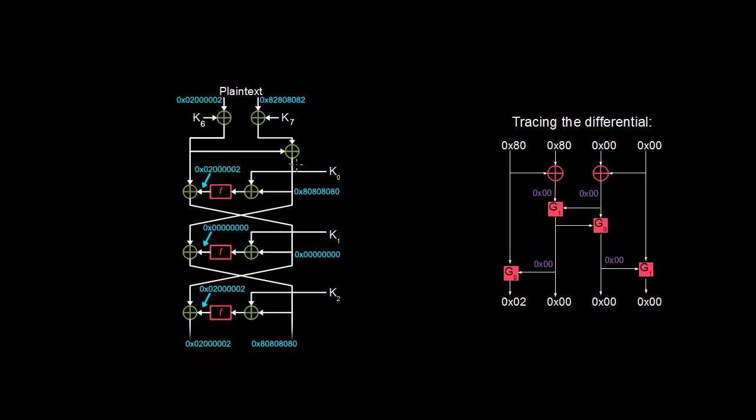Now this right side comes down 80, 80, 80, 80. It gets XORed with this zero differential here to produce again 80, 80, 80, 80. When you XOR any value with zero, you get back the original value. So this becomes the output of round three on the right side. We are done with this side.